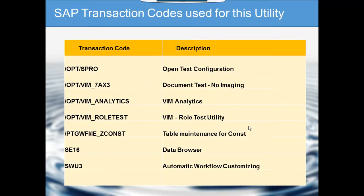We are going to cover the transaction codes used for Vendor Invoice Management. The first transaction code is the OpenText configuration: /opt/spro. You don't need to memorize this because I'll provide a folder where you can download the favorites, and all transaction codes will be there. Here we do all the configuration related with Vendor Invoice Management, such as including document types, adding buttons, adding VIM exceptions, and so on.